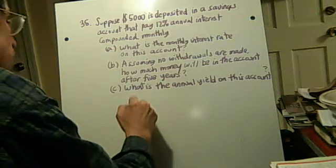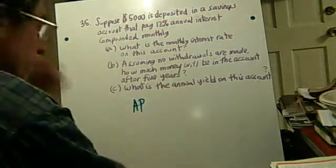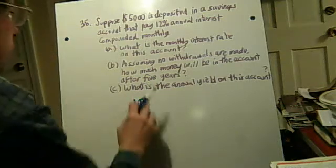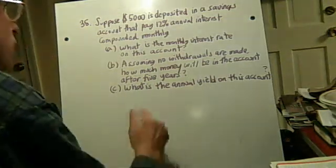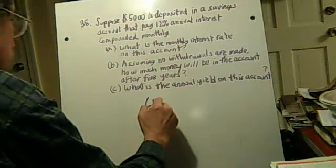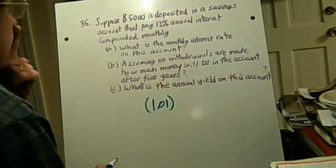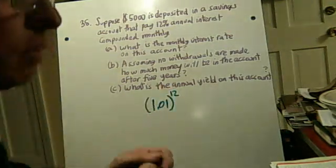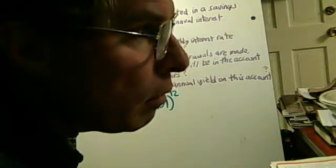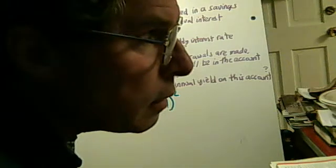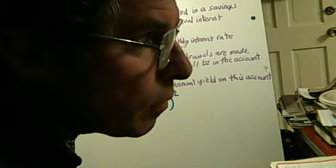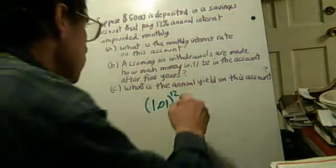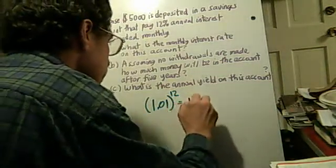So I'm going to call it, I don't know if that's called the annual percentage something or other, or the effective yield. There might be a name for that on these accounts. But in our case, we're just going to take 1.01 and we're just going to raise it to the 12th power. Now you're going to get a number, it's going to be close to 12%, but it should be a little bit more. Now, 1.01 to the power of 12. Sure enough, it comes out to 1.1268.